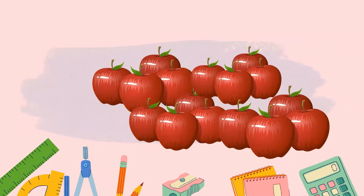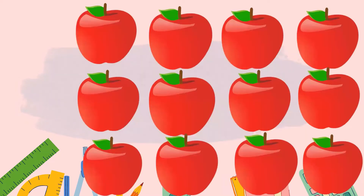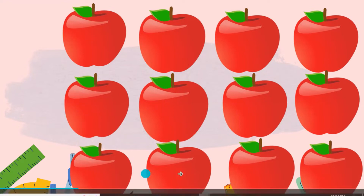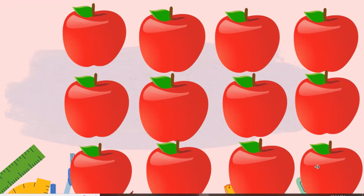Let's begin this lesson with these apples. I'm wondering how many apples I have here. We can count them, but it's a little bit difficult. I think it's better if we organize them — let's make an array with those apples so we can count them easily. One, two, three, four, five, six, seven, eight, nine, ten, eleven, twelve. Now I know I have 12 apples! How can we use this array to find a multiplication equation?